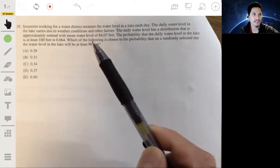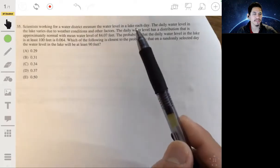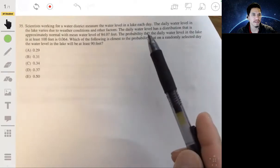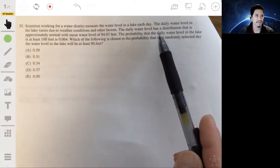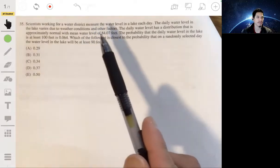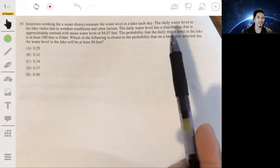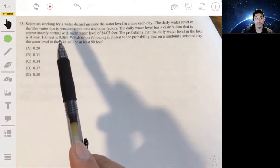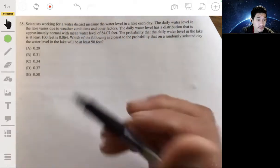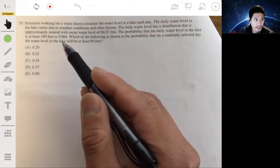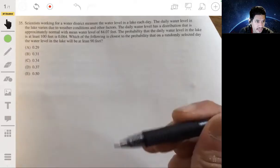Scientists working for a water district measure the water level in a lake each day. The daily water level has a distribution that is approximately normal with mean water level at 84.07 feet. The probability that the daily water level in the lake is at least 100 feet is 0.064. Which of the following is closest to the probability that on a randomly selected day, the water level in the lake will be at least 90 feet?